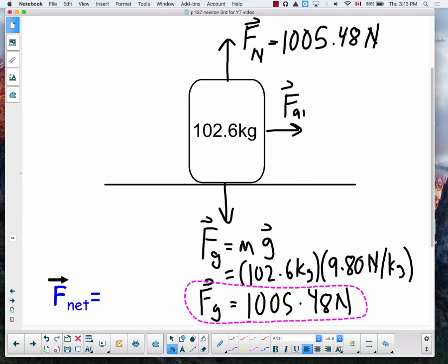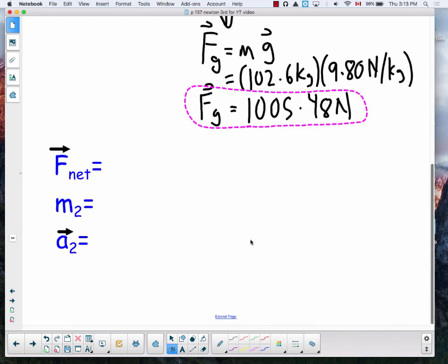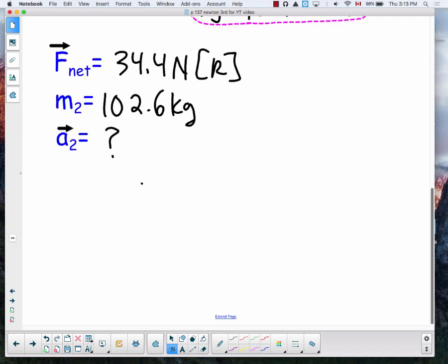And the only other force acting on it was that applied force from the original push, which was 34.4 newtons. And in this case the direction is to the right. So it is the same amount of force, it happens to be in the right direction now. But because this is a slightly larger hockey player, we should find that the acceleration is going to be smaller. So this will be m₂ for player two, acceleration two.